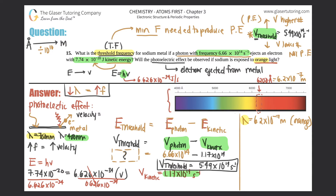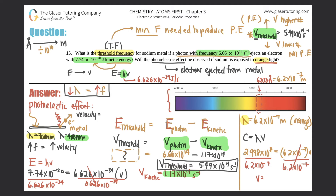To convert wavelength to frequency, we use c = λv, where c is the speed of light: 2.998 times 10 to the 8th m/s. So 2.998 × 10⁸ = 6.2 × 10⁻⁷ × v. Dividing both sides by 6.2 × 10⁻⁷ gives the frequency of orange light: approximately 4.83 times 10 to the 14th cycles per second.